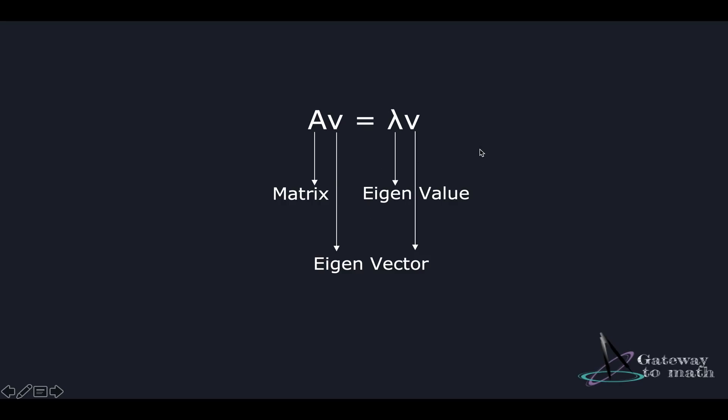An important equation associated with eigenvectors is right here in front of you. Here A is matrix or the function. V is my eigenvector. Lambda is my eigenvalue and V is my eigenvector on the right hand side as well. So what is so great about this equation?